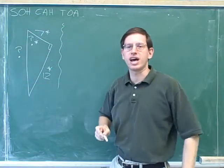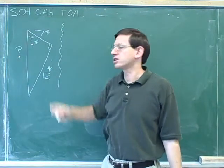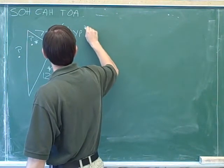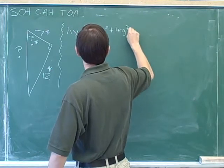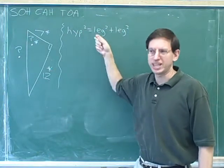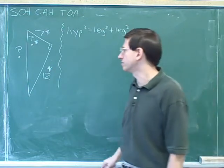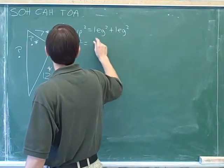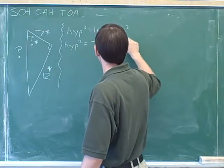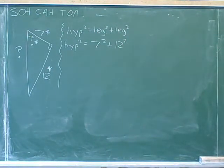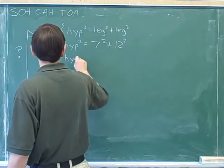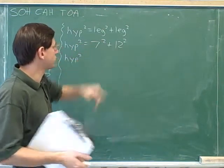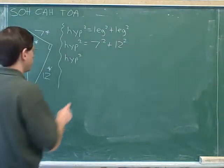This is one of the problems where you're given two sides. When you're given two sides, you don't need a trig function to find the third side — you can just use the Pythagorean theorem. The general theorem is: hypotenuse squared equals leg squared plus leg squared. The hypotenuse we don't know, but we know one leg is 7 and the other is 12. So hypotenuse squared equals 7 squared plus 12 squared. You can do this whole calculation in one step on your calculator — just type in 7 squared plus 12 squared — and your calculator should tell you that equals 193.